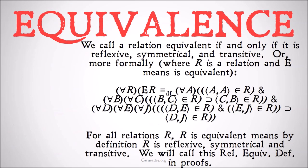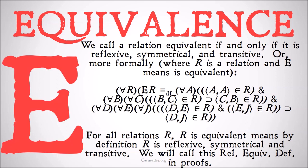Finally, equivalence. We call a relation equivalent if and only if it is reflexive, symmetrical, and transitive. More formally, where R is a relation and E means 'is equivalent': for all relations R, R is equivalent means by definition that R is reflexive, R is symmetrical, and R is transitive. We're going to call this the equivalence definition in proofs.